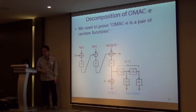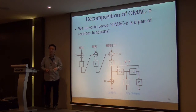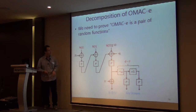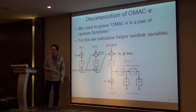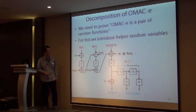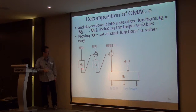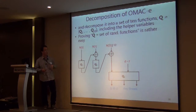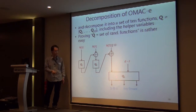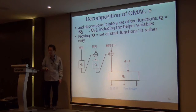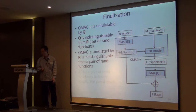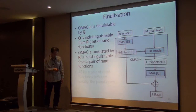We need to prove that the OMAC extension is indistinguishable from a pair of random functions. To do this, we introduce some random variables that always cancel in the OMAC extension computation, and compose a set of ten functions Q1 to Q10, which involve helper random variables in each computation. We then prove that these function sets are indistinguishable from the set of random functions even if they are independently accessed. This is the proof technique from the OMAC paper. The finalization is quite standard.